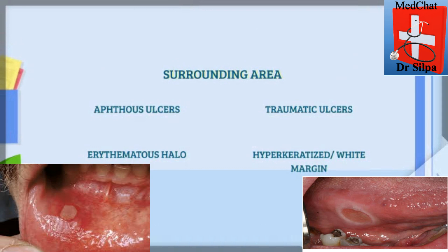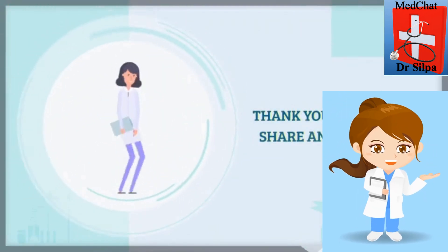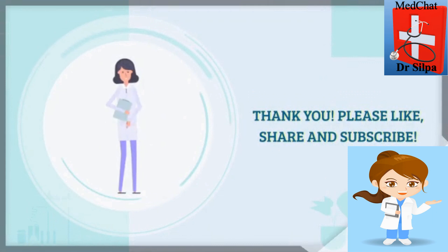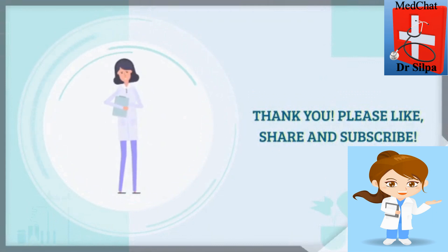There will be an erythematous halo surrounding an aphthous ulcer, while traumatic ulcers usually tend to have a hyperkeratinized or whitish margin. These are the differentiating features between an aphthous ulcer and a traumatic ulcer.